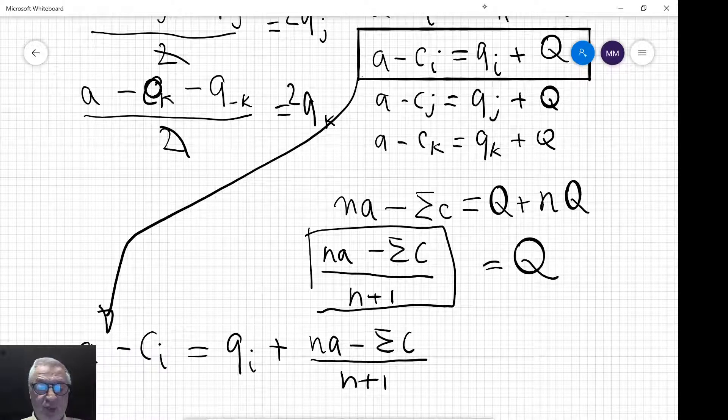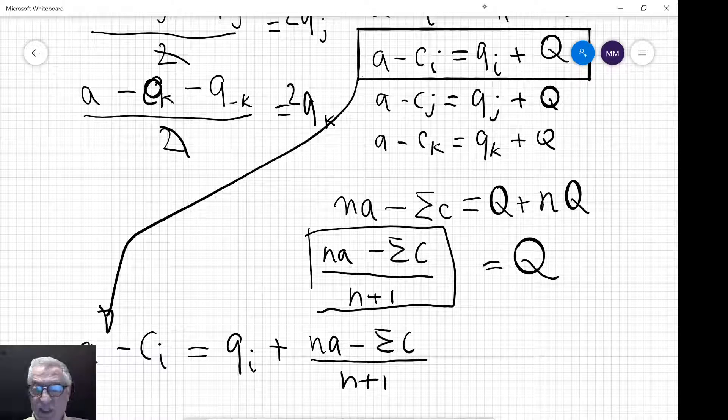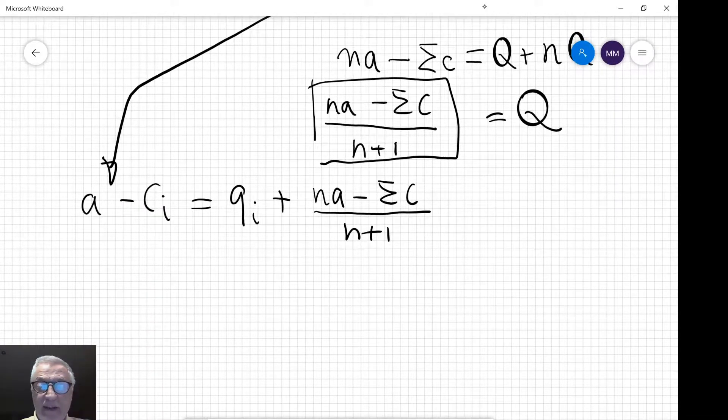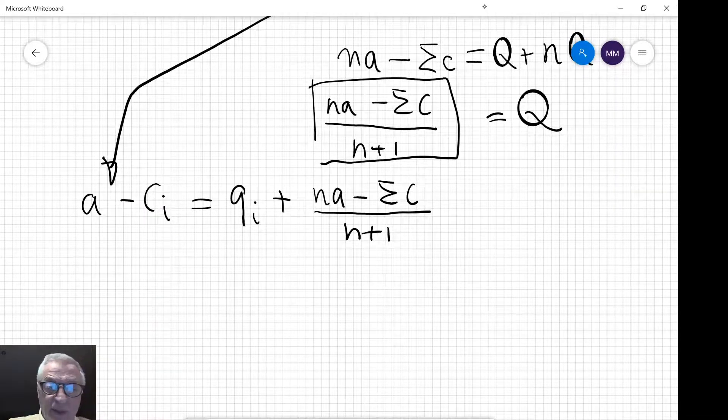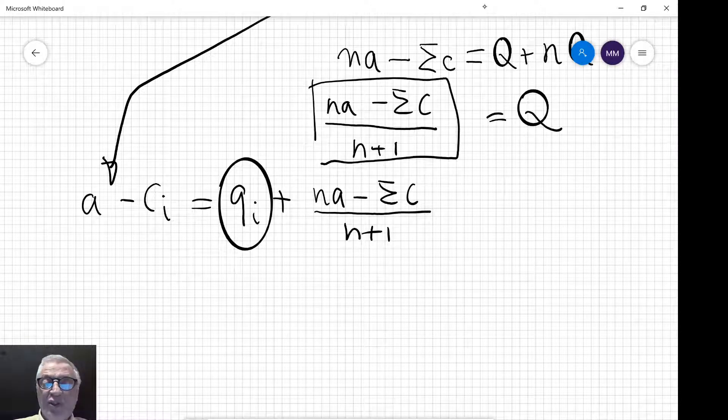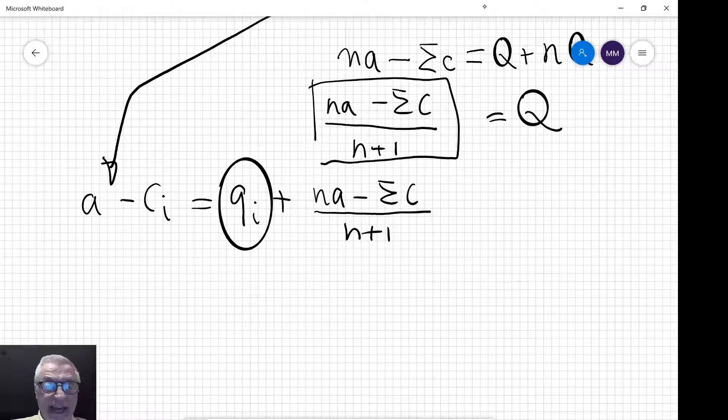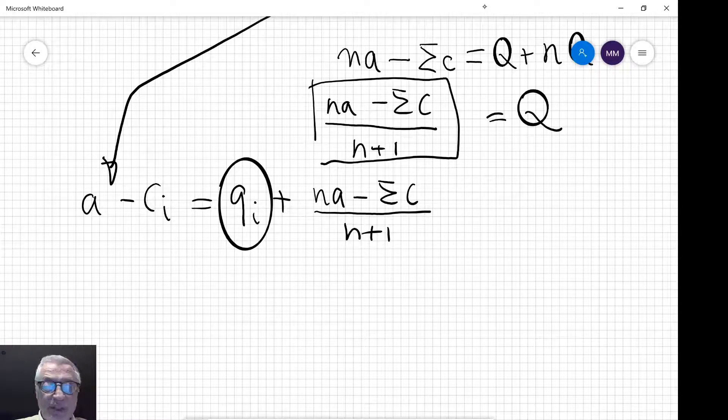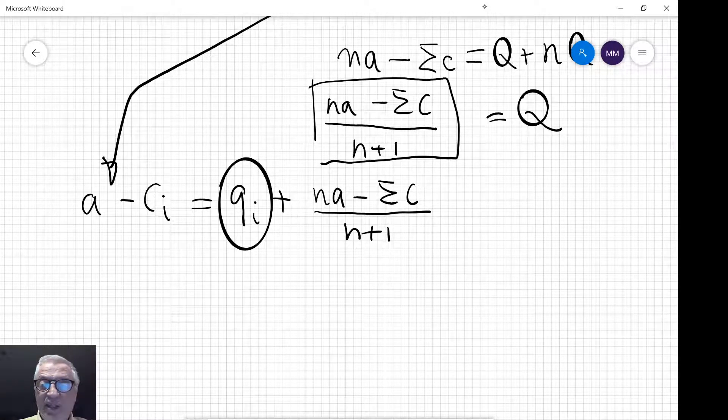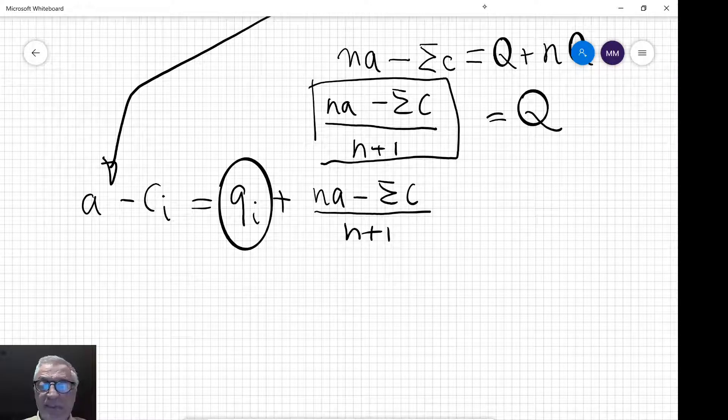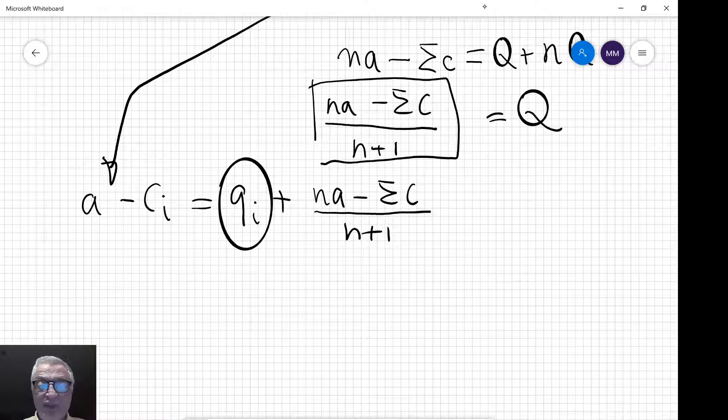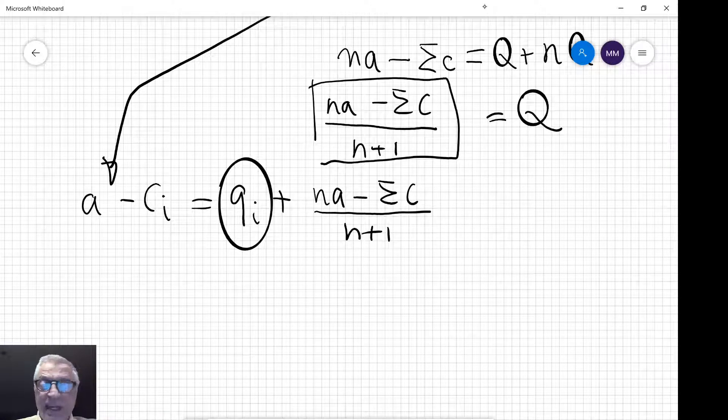Now you can see that is what we're looking for, because here we have the best response of firm I and everything else is a parameter: n is the number of firms, a is the intercept of the demand curve, c's are the marginal costs of all the firms. So we know everything, so we have solved the problem. We know exactly how much each firm will produce.